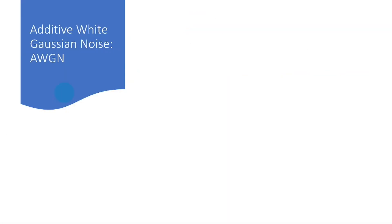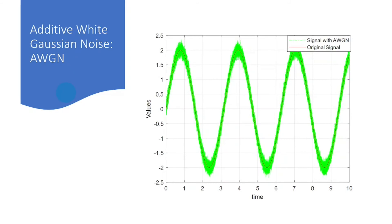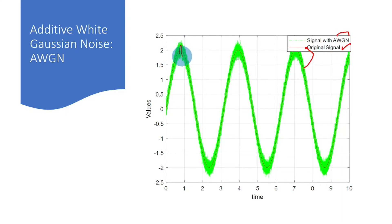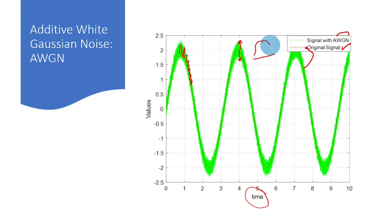In the context of additive white Gaussian noise: consider a signal which is simply a sine wave, represented by the bold line. If we add white Gaussian noise to it — that is, additive white Gaussian noise — we would have fluctuations or attenuations, and the level of spread is based on the Gaussian distribution, controlled by the variance sigma squared.